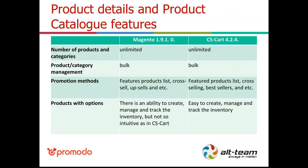For product details and product catalog features, both systems have a standard set of features — unlimited number of products and categories, bulk category and product management, and similar promotion methods and product features. The one thing I want to point out is that it is more convenient to create, manage, and track the inventory of products in the CS-Cart system than in Magento.